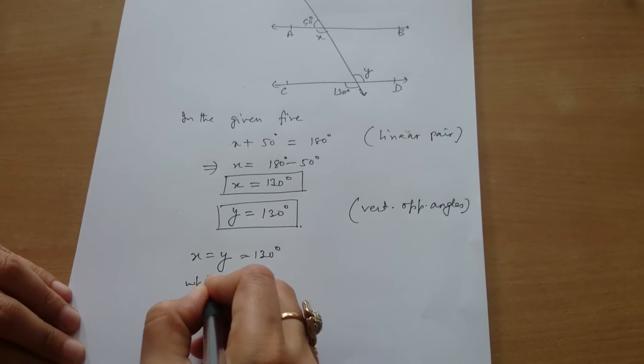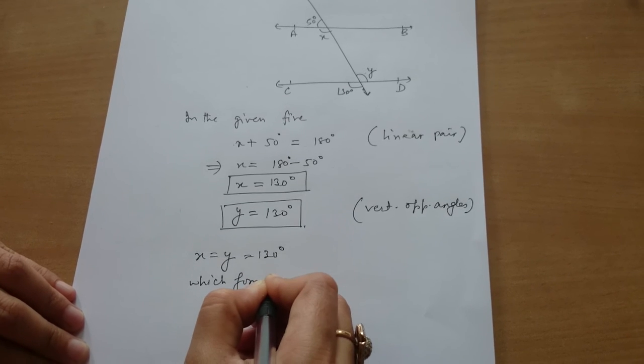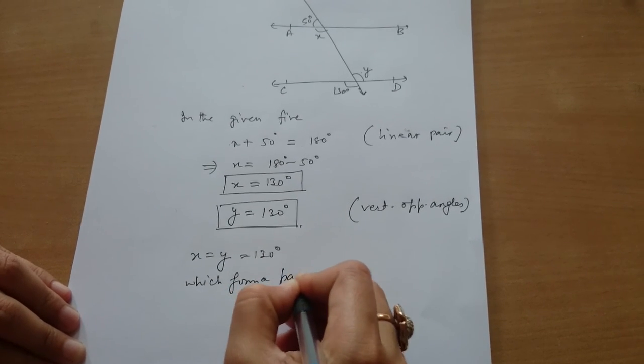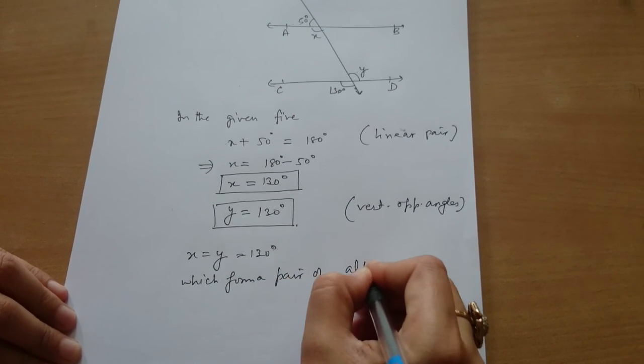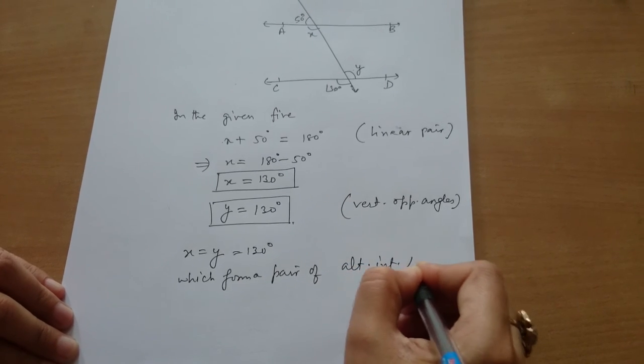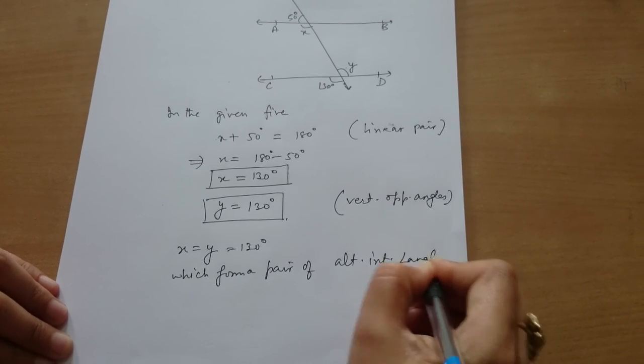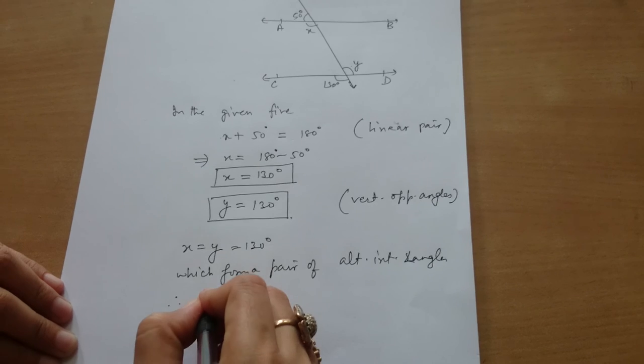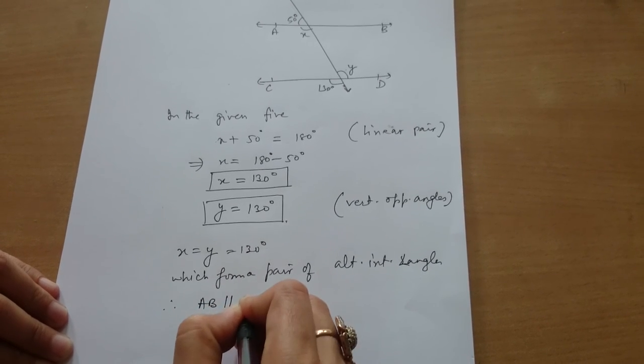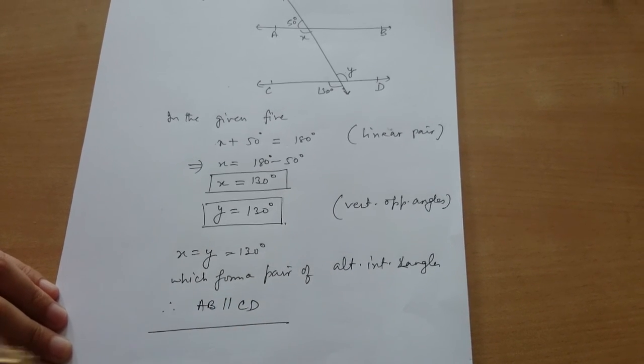Which forms a pair of alternate interior angles. This proves that AB is parallel to CD. Good.